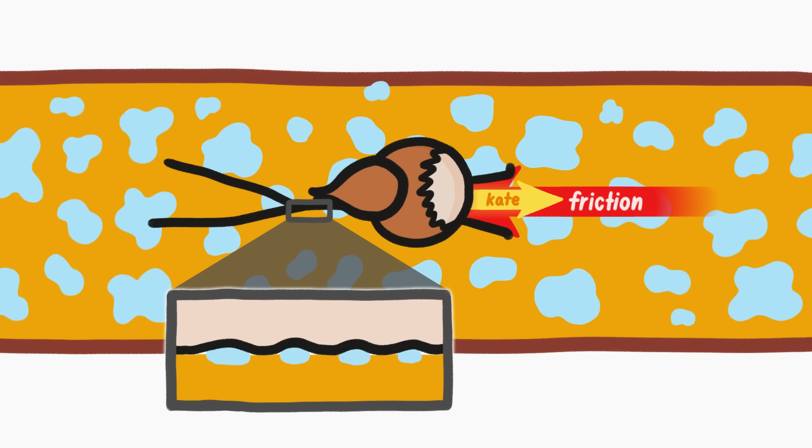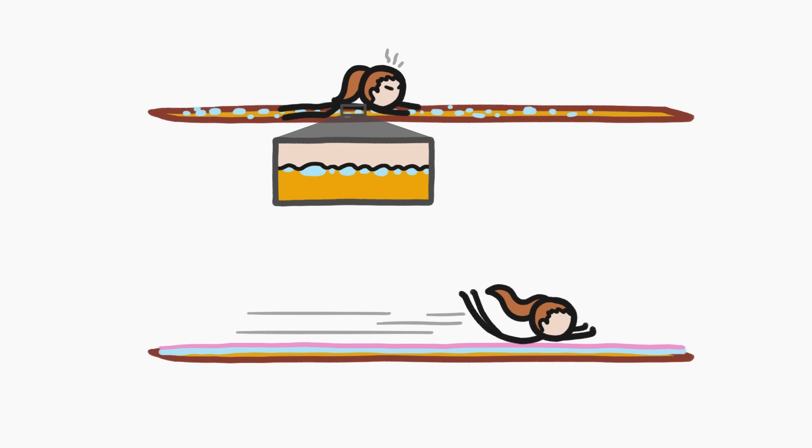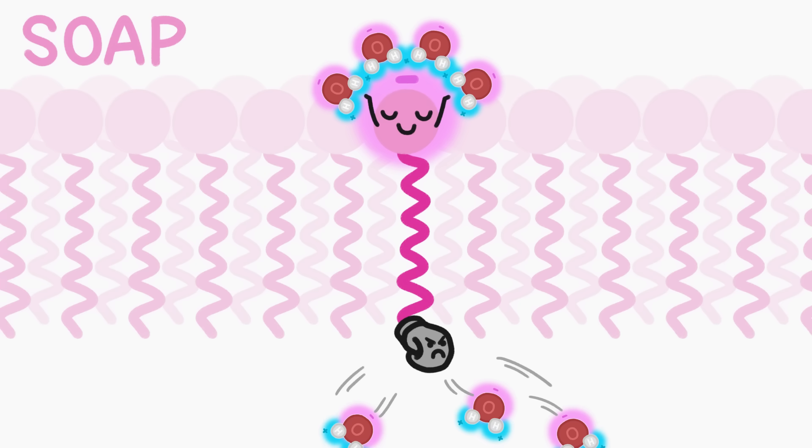That is why most slip and slides use a running hose to keep the water flowing. But we can make it slicker by adding a little soap to the mix. Soap slipifies things in two main ways. First, because soap molecules have two distinct ends: a charged end that's attracted to charged water molecules, and a neutral end that wants nothing to do with water molecules.